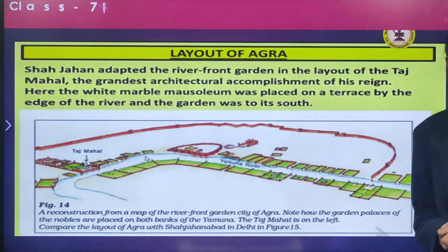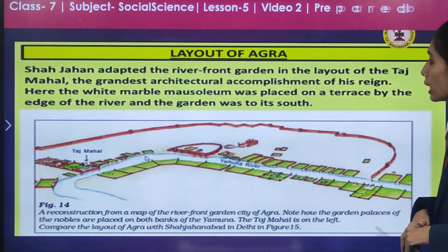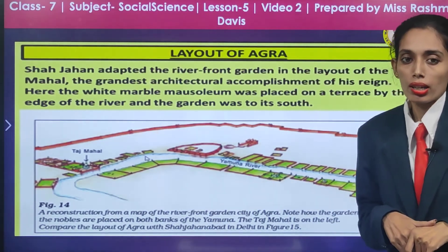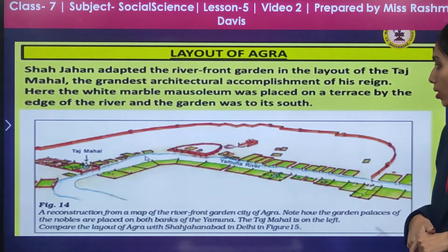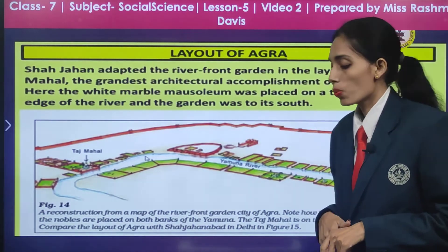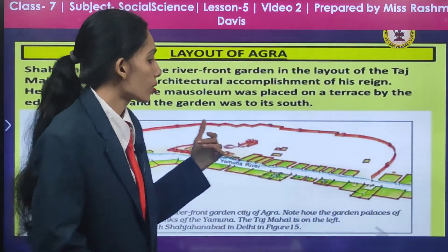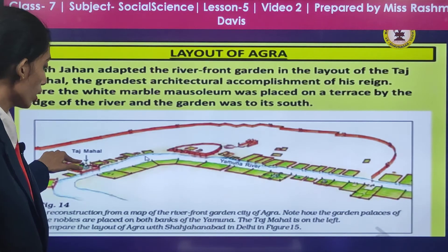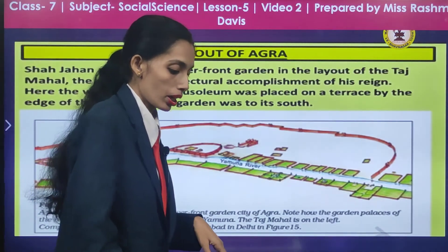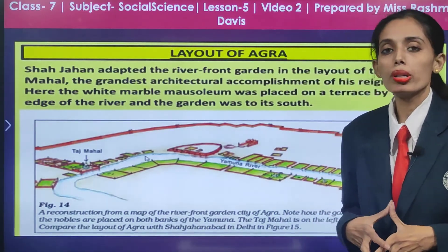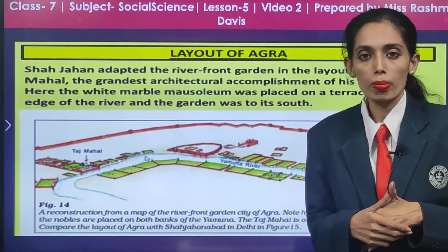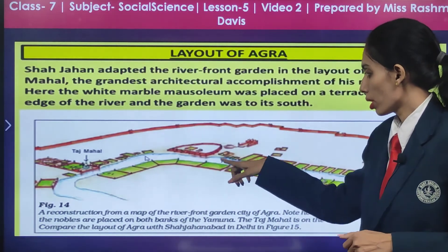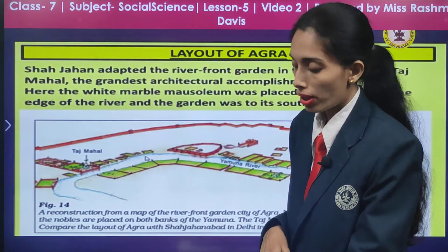Layout of Agra: Shah Jahan had adopted the riverfront garden in the layout of the Taj Mahal, the grandest architectural accomplishment of his reign. The white marble mausoleum was placed on a terrace by the edge of the river, and the garden was to its south side. During this construction, he gave one of his sons and the nobles the front area along the river, while the remaining nobles were given places within the city, not nearby the river. So they could earn maximum benefit because of the flow of the Yamuna river, with a residential area for them to stay in.